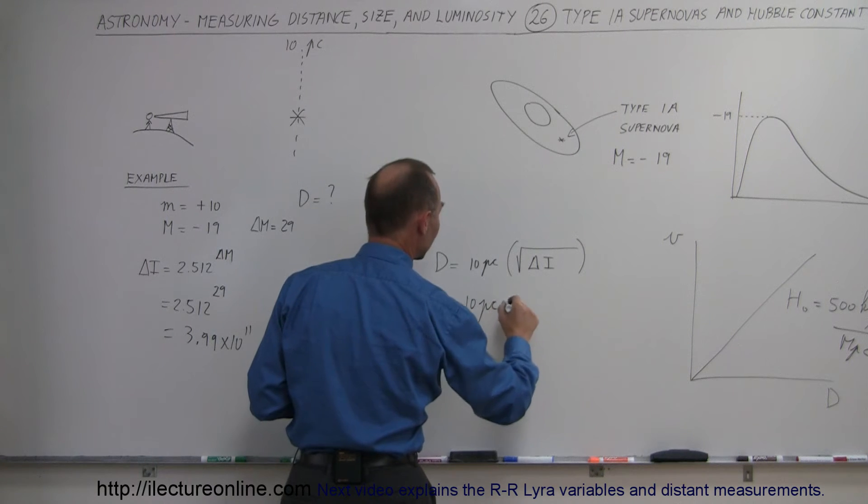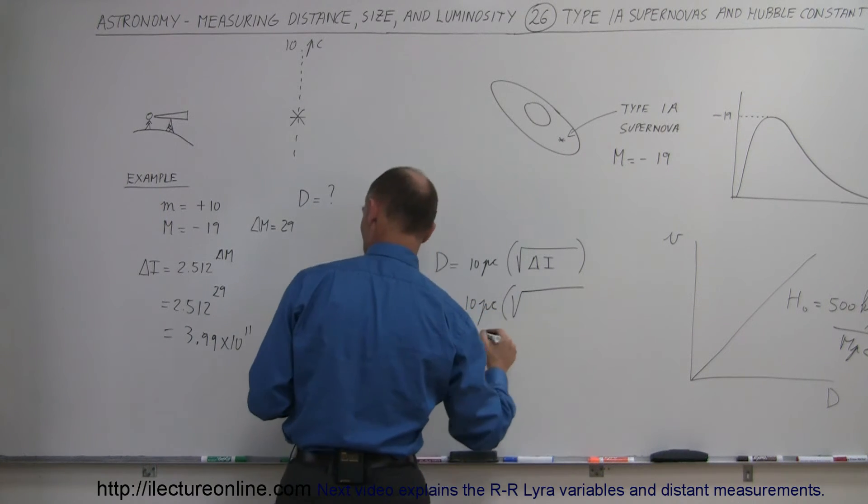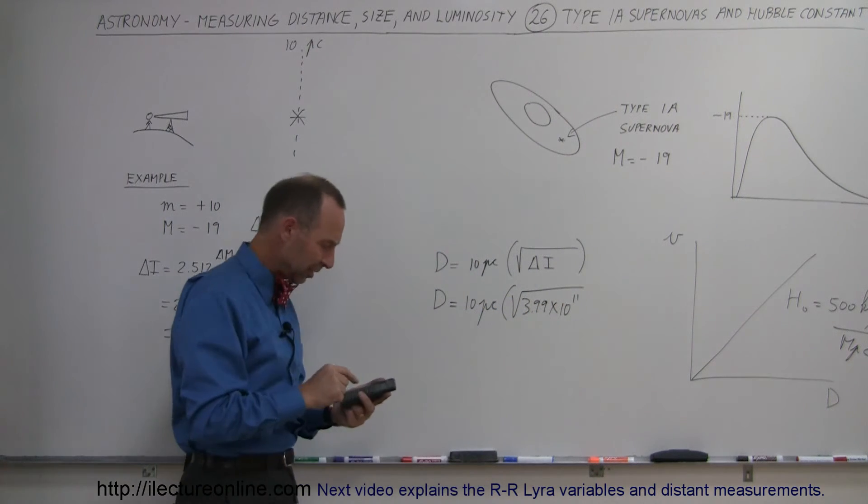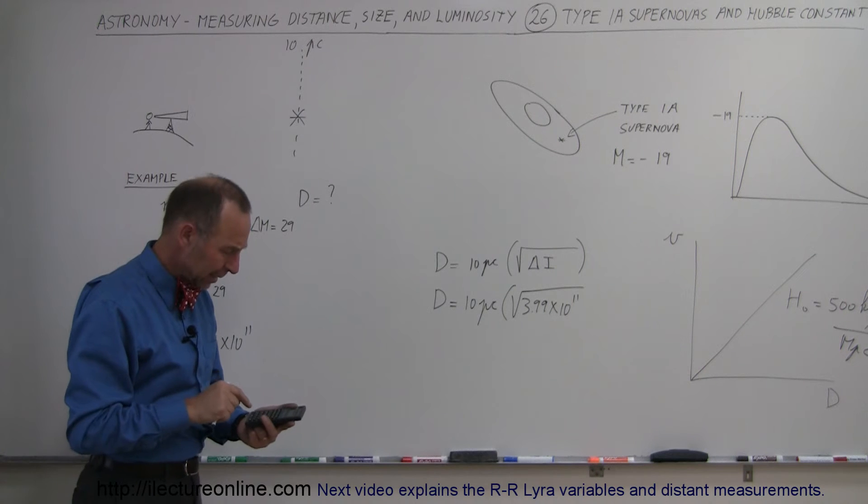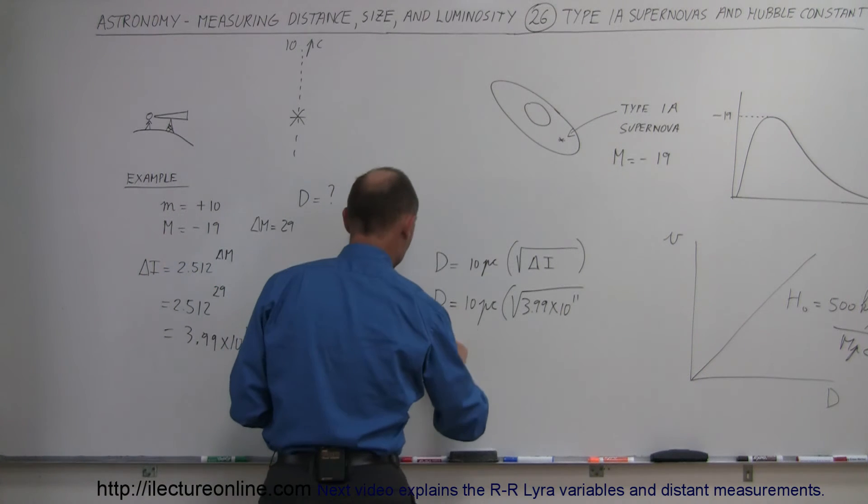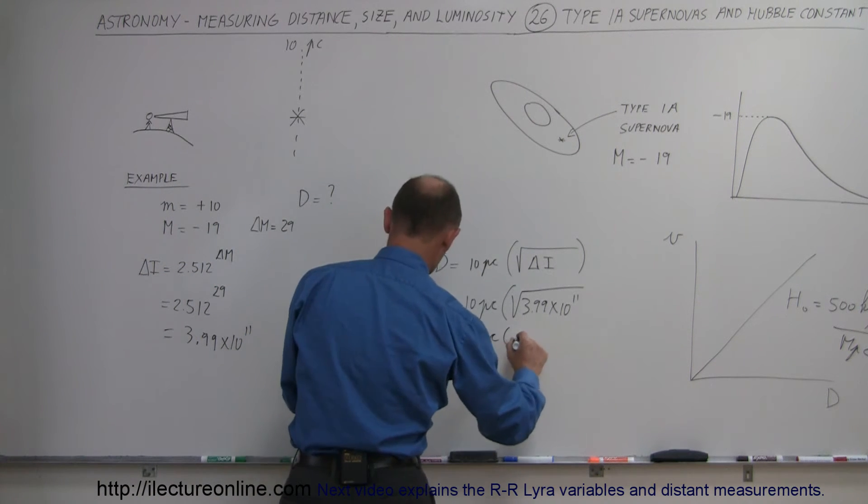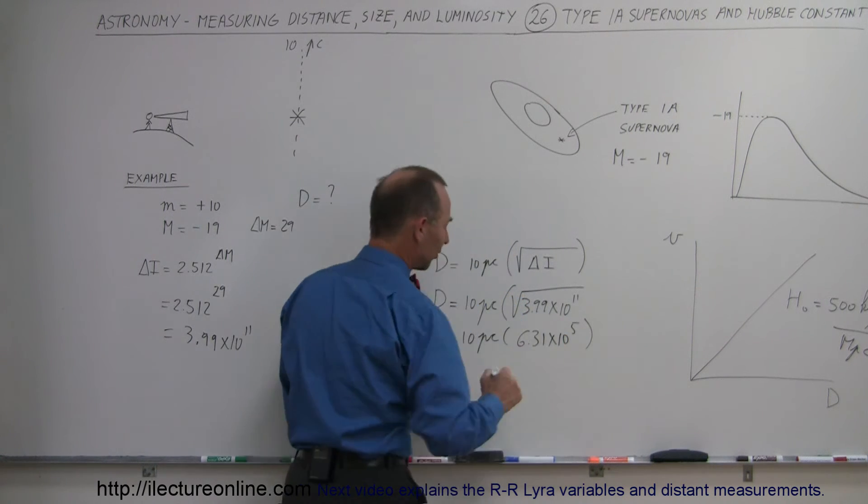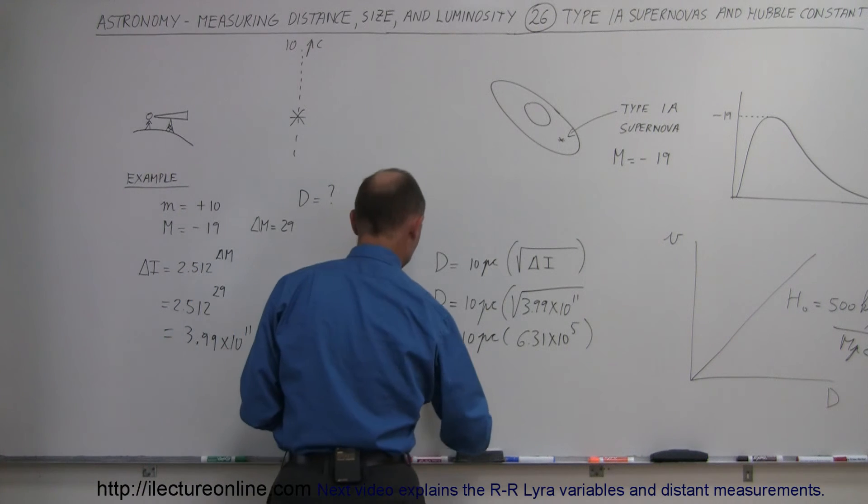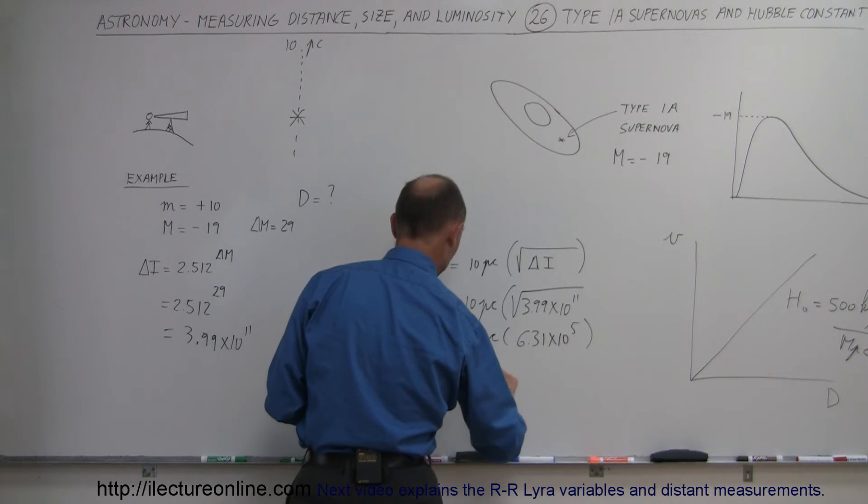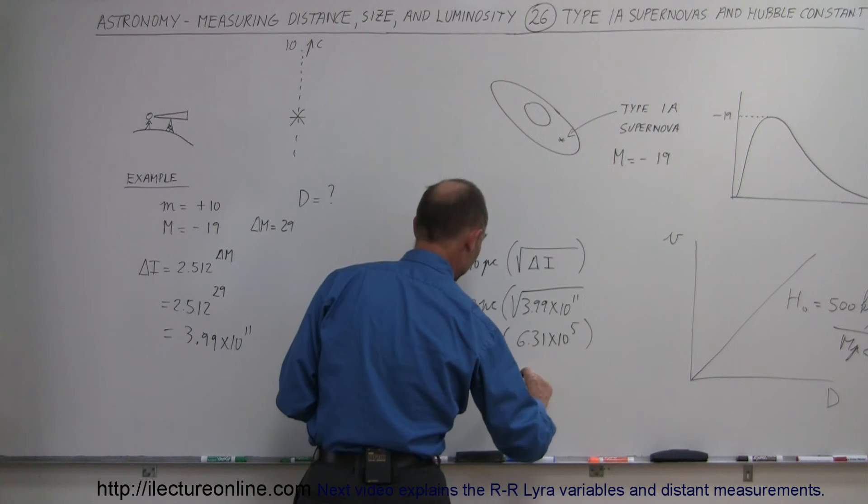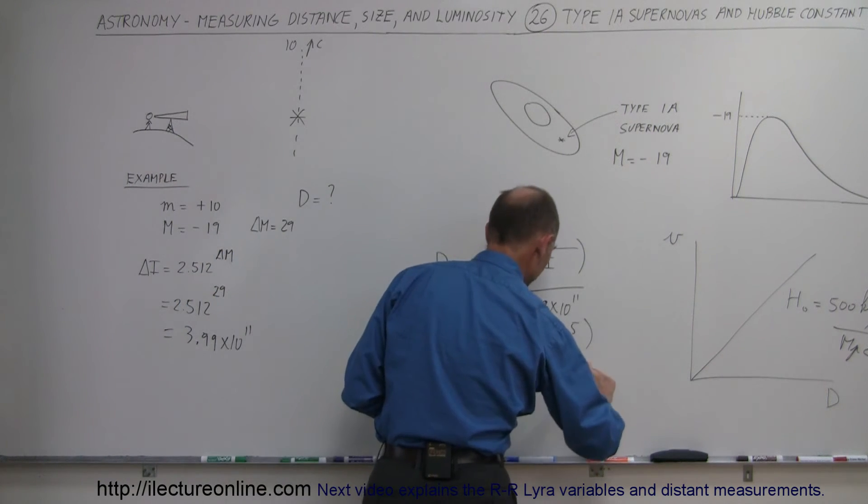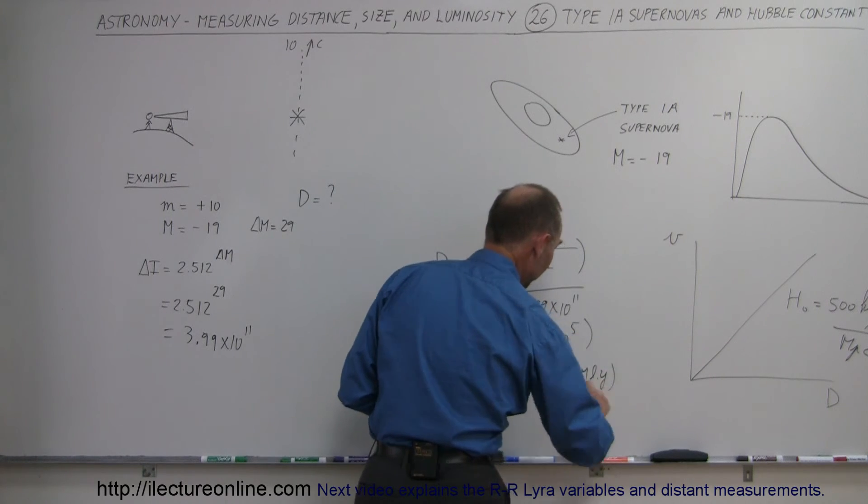Therefore, the distance to the galaxy, which is where the Type 1a supernova occurred is 10 parsecs times the square root of 3.99 times 10 to the 11th. So, let's take the square root of that. That gives us d equals 10 parsecs times 6.31 times 10 to the 5th. That's 631,000 times 10. So, that means that d equals about 6.31 megaparsecs, which is about 20 million light years.